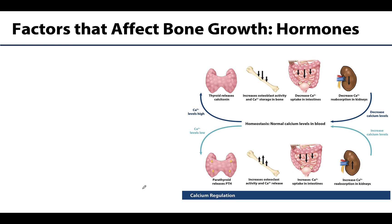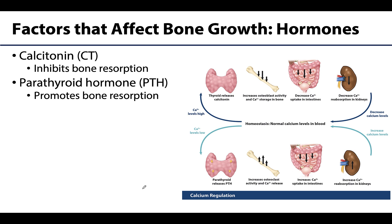Now let's talk hormones, as some are extremely important in calcium homeostasis, which can initiate certain bone cells. Starting with calcitonin (CT) — not to be confused with the similarly named calcitriol — calcitonin is a hormone secreted by the thyroid gland, which is your largest endocrine gland. Calcitonin will inhibit bone resorption, meaning it inhibits osteoclasts from breaking down bone and releasing calcium into the bloodstream, keeping calcium stored in bone.